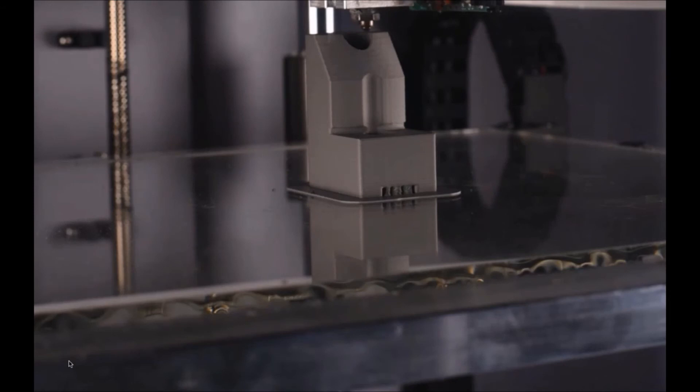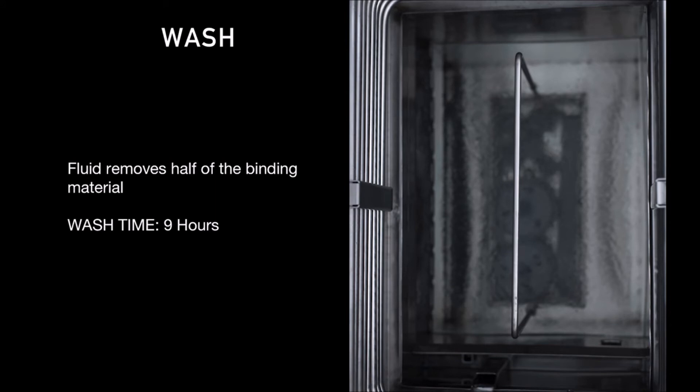The next step is to take that part and put it in the washing station. The washing fluid removes about half of the binding material. It takes about nine hours to wash entirely through that part, cleaning out half of the binder material so you're left with a part that's sponge-like, porous. It's important to note that you cannot overwash the part. The washing station is connected to our software, so we'll tell you exactly how long to wash it and you'll get an email when it's done.